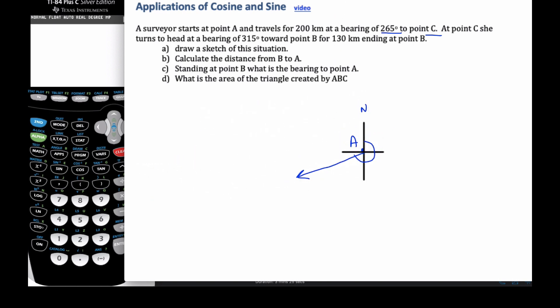All right, and I might even extend my arrow, extend the arrow even further if I can. And so make this 200. And this is point C. And at point C, she turns to head at a bearing of 315. So again, I'm going to put it on my north, south, east, west.